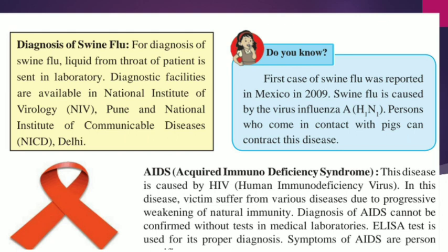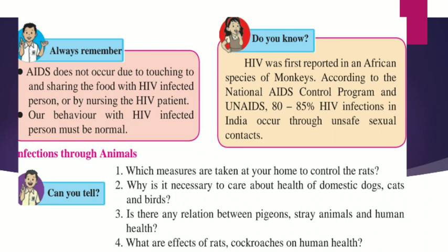The third disease is AIDS. This disease is caused by HIV — Human Immunodeficiency Virus. In this disease, victims suffer from various diseases due to progressive weakening of natural immunity. Diagnosis of AIDS cannot be confirmed without a test in medical laboratories; the ELISA test is used for its proper diagnosis. Symptoms of AIDS are person-specific. Always remember: AIDS does not occur due to touching or sharing food with an HIV-infected person. Our behavior with an HIV-infected person must be normal.